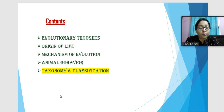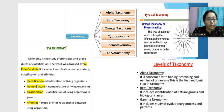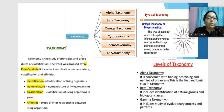Moving on to taxonomy and classification. Taxonomy is the study of different methods of classification and includes identification, nomenclature, and classification. Identification means identifying an organism; nomenclature means naming it; classification means placing them into different categories. Studying interrelationships among groups is also included. This word was proposed by A.P. de Candolle. Taxonomy can be divided into types: alpha, beta, omega, and gamma — these are levels of taxonomy.